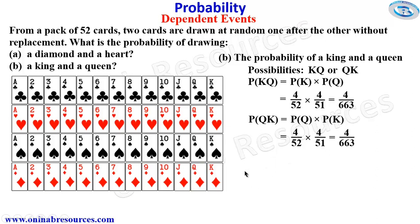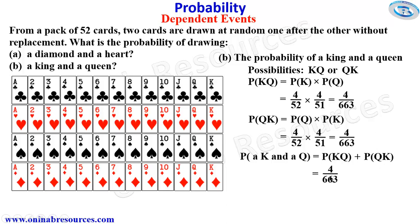So the probability of drawing a king and a queen will be the probability of picking the first one king and the second one queen, plus the probability of picking the first one queen and the second one king. Substituting, we have 4 over 663 plus 4 over 663. Summing them up, since the denominators are equal, we just sum up the numerators, which gives 8 over 663 — and this cannot be simplified further. And that's the end of this tutorial. I hope you enjoyed it. Thank you for watching.